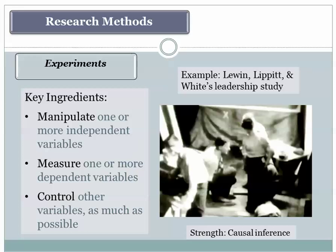An example of such a study is Lewin, Lippitt, and White's classic study of leadership, where they were interested in the impact of different styles of leadership on groups. They manipulated leadership style with three different kinds: a laissez-faire leader who was relatively standoffish and didn't provide much direction; a democratic leader who worked closely with the young boys in the study; and an autocratic leader who primarily gave orders. Their research indicated that people were happiest and possibly more productive when working under a democratic leader, although many groups that fell under the sway of the autocratic leader were also fairly productive.